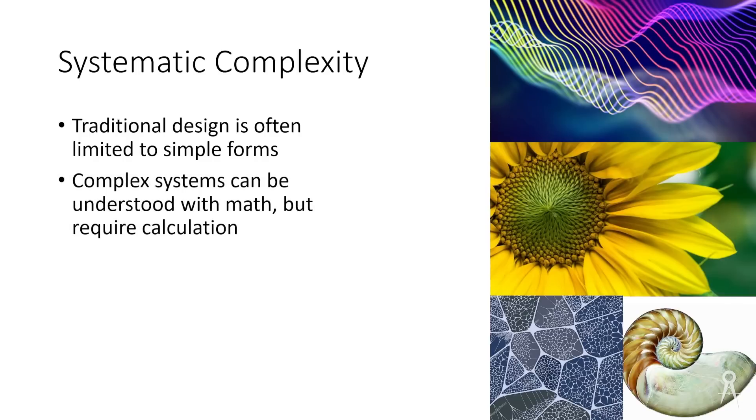Complex systems can be understood maybe with math, like we see the algorithm for a sunflower seed. We'll need calculation, however, to figure that out and maybe to create it. Things like growth, expansion, change, and diversity require advanced solvers. We're not just going to be, even for engineers, figuring these out just on the go. And that sort of provides an opportunity for something like parametric design, which is going to use some of the codes and algorithms that we'll look into next.